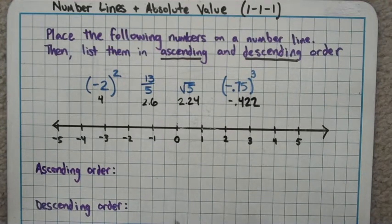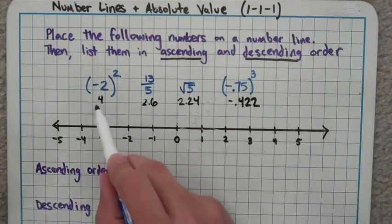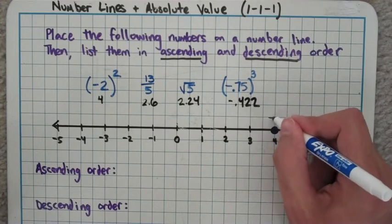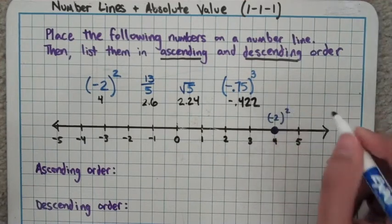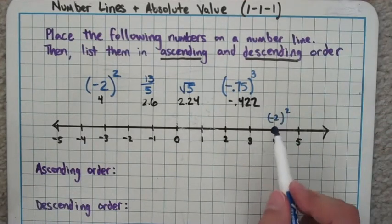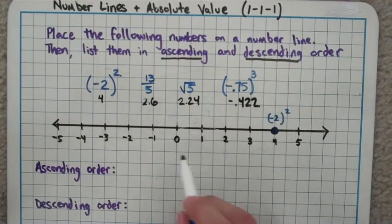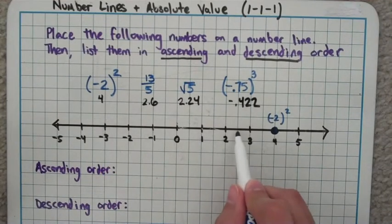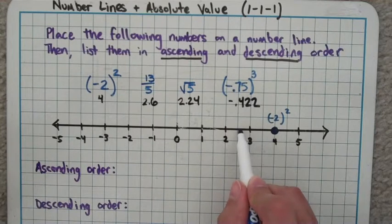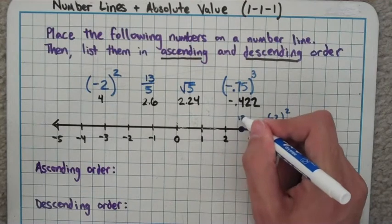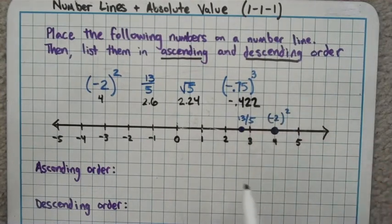When I put them on the number line, just as a technicality, I'm going to write the original number down. So my first one right here at 4, I'm actually going to write down my negative 2 squared again. You're supposed to label what number it is, so I put the original number instead of putting 4 there. So at 2.6, between 2 and 3, that's 2.5, the halfway mark. It'd be a little further than that, like right there. That's going to be my 13 over 5. The labeling is important.